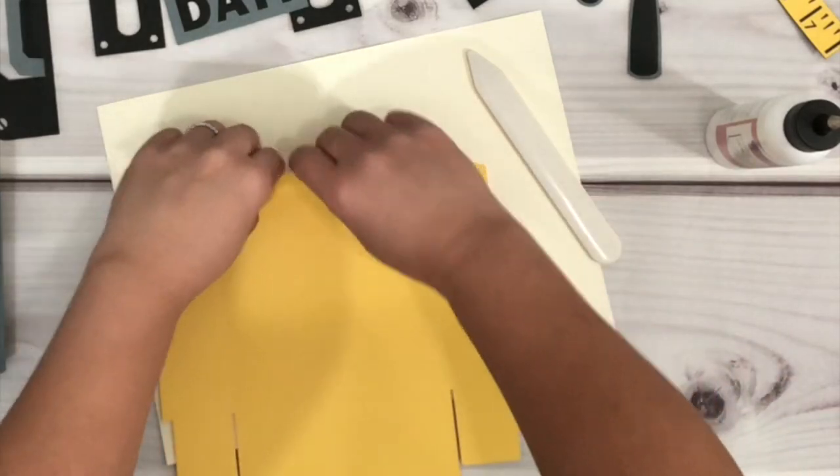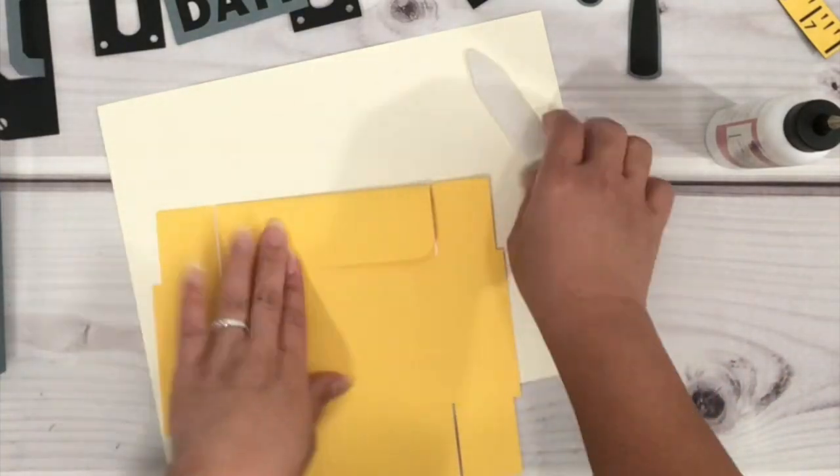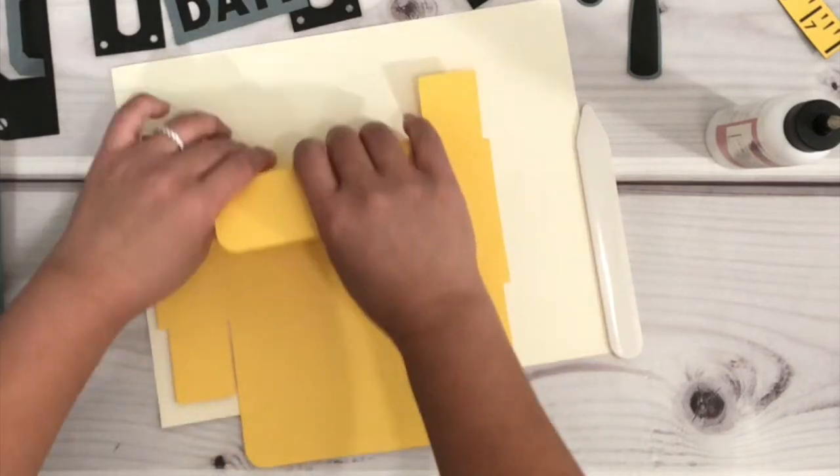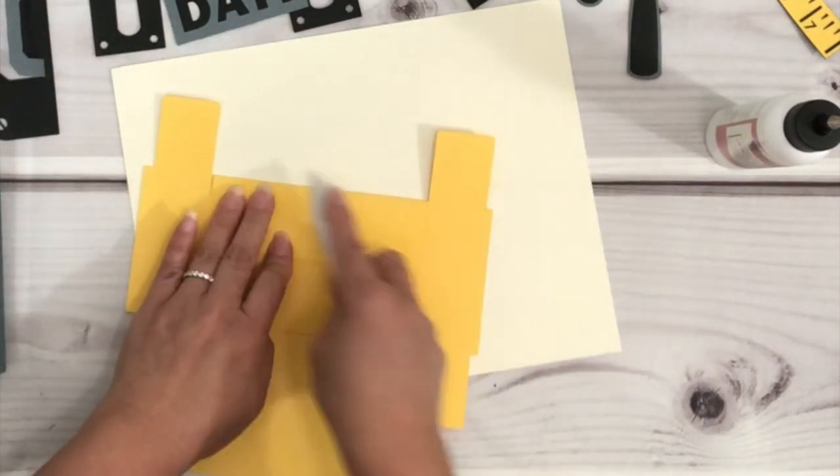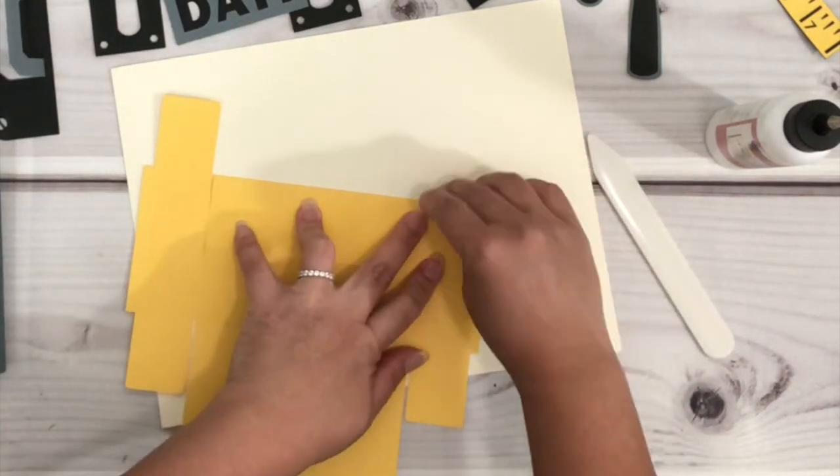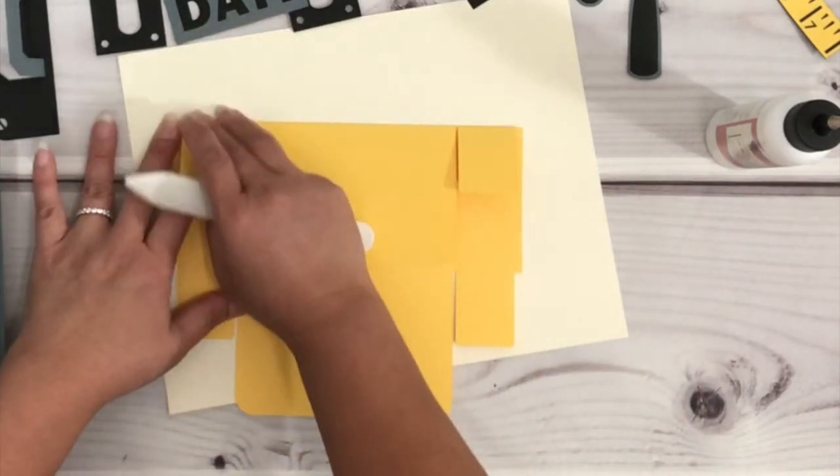Next I'm going to do the folds on the yellow cardstock, so all of the score lines that are shown I'm just going to simply fold all of them. You can also use your burnish tool, ruler, or credit card to help you press on the fold. Whichever works for you is just fine.